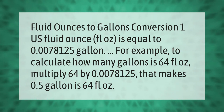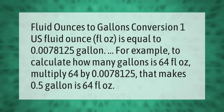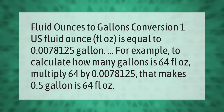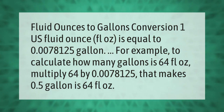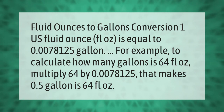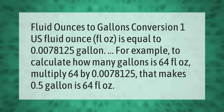Fluid ounces to gallons conversion: one U.S. fluid ounce is equal to 0.0078125 gallon. For example, to calculate how many gallons is 64 fluid ounces, multiply 64 by 0.0078125 — that makes 0.5 gallon, as 64 fluid ounces equals half a gallon.